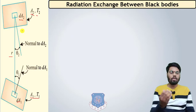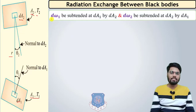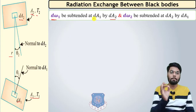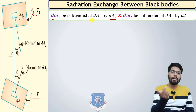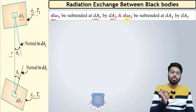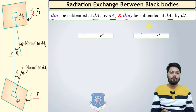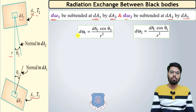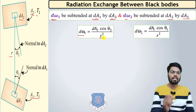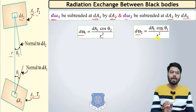From our knowledge of solid angle, dω1 is the solid angle made by dA2 and subtended at dA1. Similarly, dω2 is the solid angle made by dA1 and subtended at dA2. From the definition of solid angle, we can write: dω1 = dA2·cosθ2 / r², and similarly dω2 = dA1·cosθ1 / r².